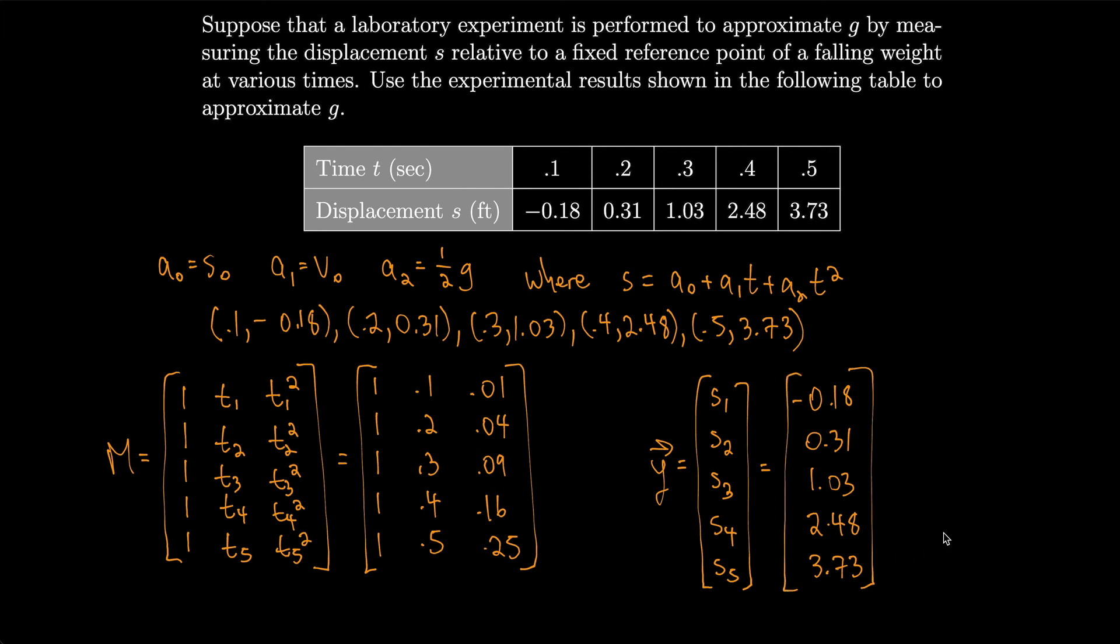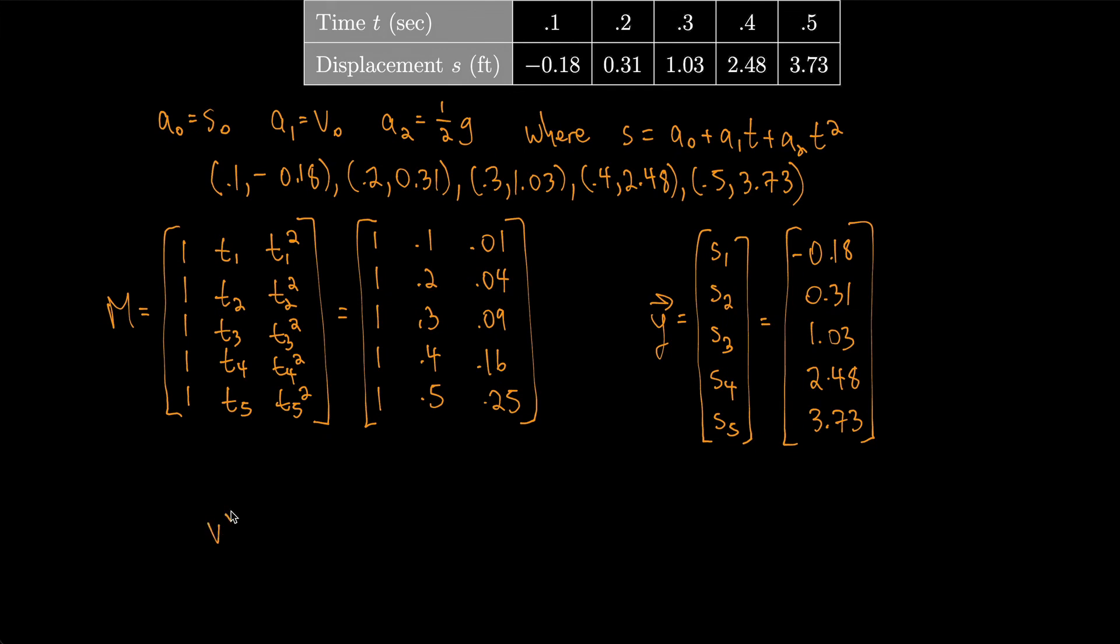Okay, beautiful. So now we can calculate v*. That'll be [a0*, a1*, a2*], and it'll be equal to, again, (M^T M)^(-1) times M^T times y. Same formula for v. So in this case, if you take the matrices, you plug them into a calculator, you do the multiplication, you should get [-0.40, 0.35, 16.1].